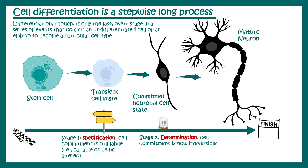There are different stages during this long process. There are two big stages during differentiation. The first stage is known as specification — it is an early stage of the commitment process. In this stage, the decision is changeable, meaning it is liable to change, and there are external and internal influences that can modulate the specification process.